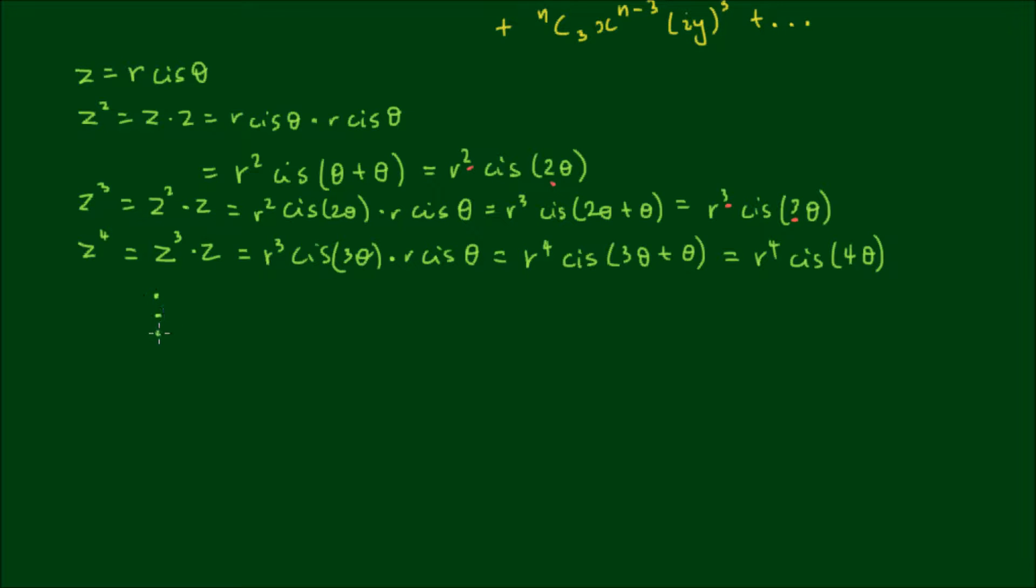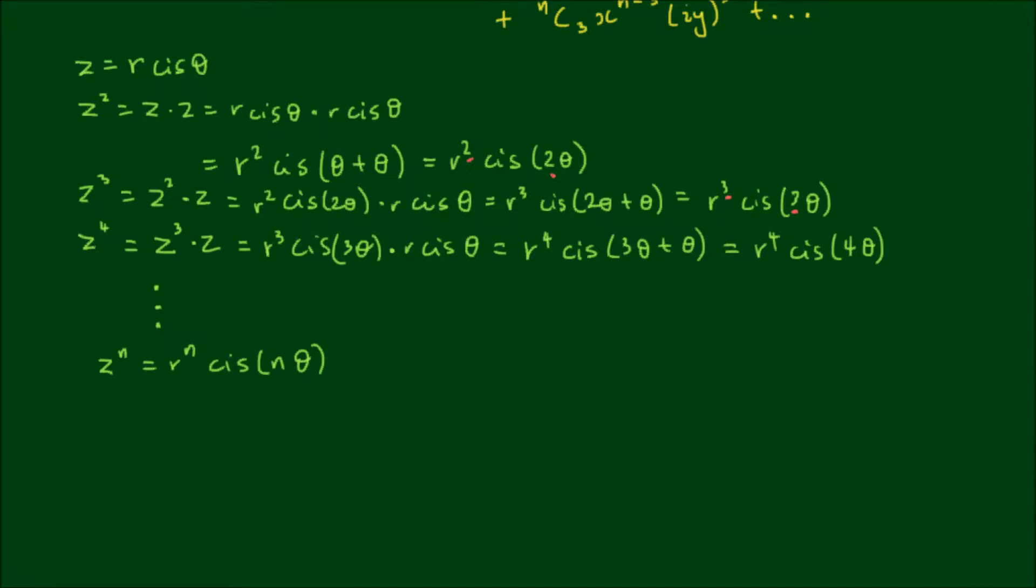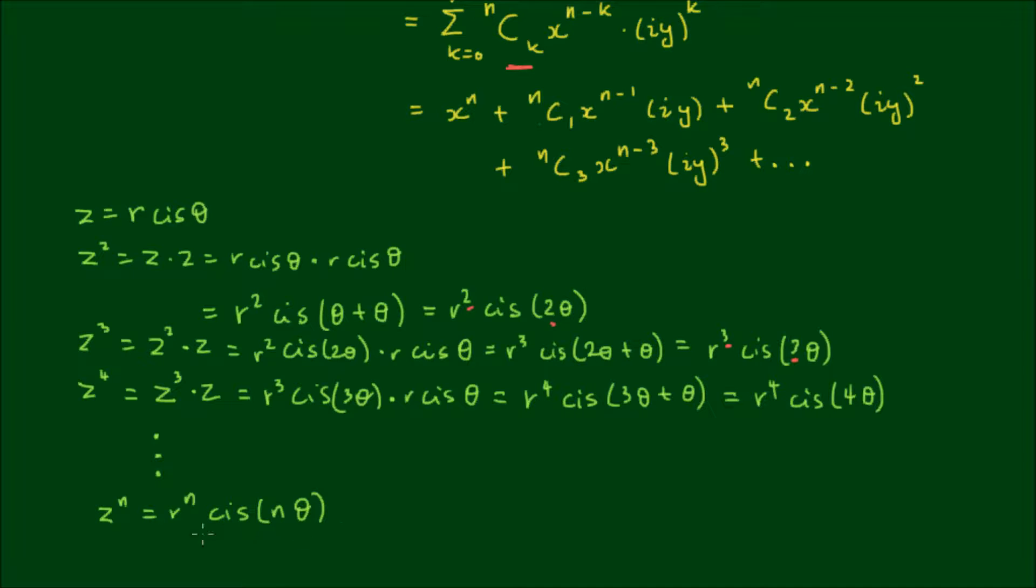So then it follows that z to the power of n would be equal to r to the power of n by cis n theta. So this is obviously a lot more easy to convert back to Cartesian form than trying to figure out what all of these come to if we had a predefined index. And I'd like to point out that this n theta is what we call De Moivre's formula.